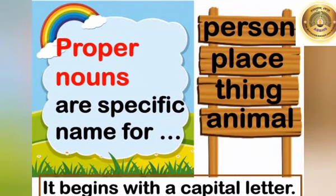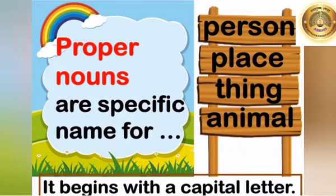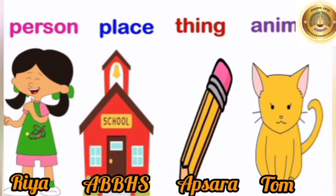Next, we discuss about proper nouns. Proper nouns are specific names for a person, place, thing or animal. It begins with a capital letter. For example, she is a girl and her name is Ria. So girl is a common noun and Ria is a proper noun. This is a school and the school name is Advocate Bapu Sahib Bonde High School, which is a proper noun. Apsara pencil is a proper noun. This is a cat and that cat's name is Tom. So Tom is a proper noun.